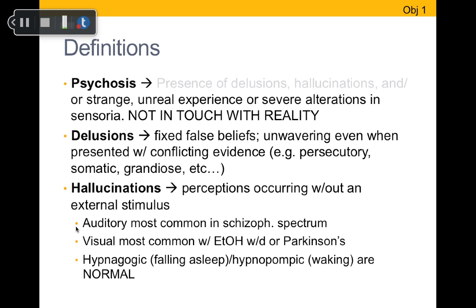To define psychosis: what's happening is that you have the presence of delusions, hallucinations, and/or strange or unreal experiences, or severe alterations in sensorium. In plain terms, the person is not in touch with reality. Something is happening within that person's brain, and they are perceiving things that are not in the real world.